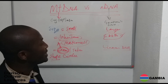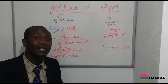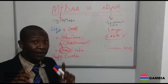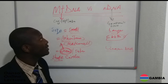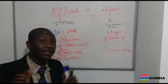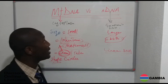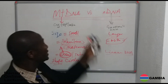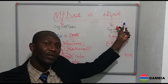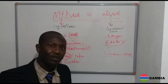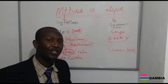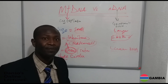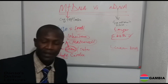So basically these are the major differences between mitochondria DNA and nuclear DNA. Don't forget they are both found in our cells but in different regions — the cytoplasm and the nucleus. Thank you so much for watching. You can send your comments and questions under the video.